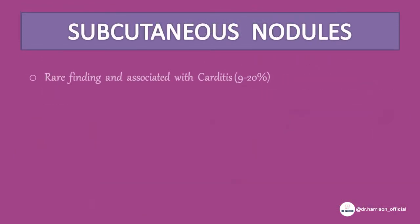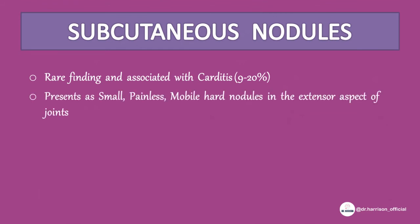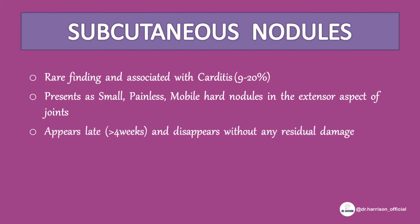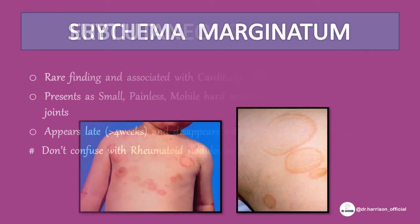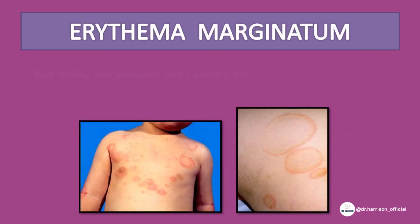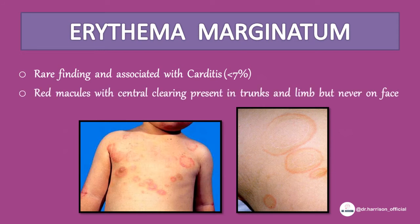Subcutaneous nodules are a rare finding associated with carditis. They are small, painless, mobile nodules on the extensor aspect of joints, appearing late and disappearing without residual damage. Do not confuse with rheumatoid nodules in rheumatoid arthritis. Erythema marginatum is also a rare finding associated with carditis — red macules with central clearing, present on the trunk and limbs but never on the face.